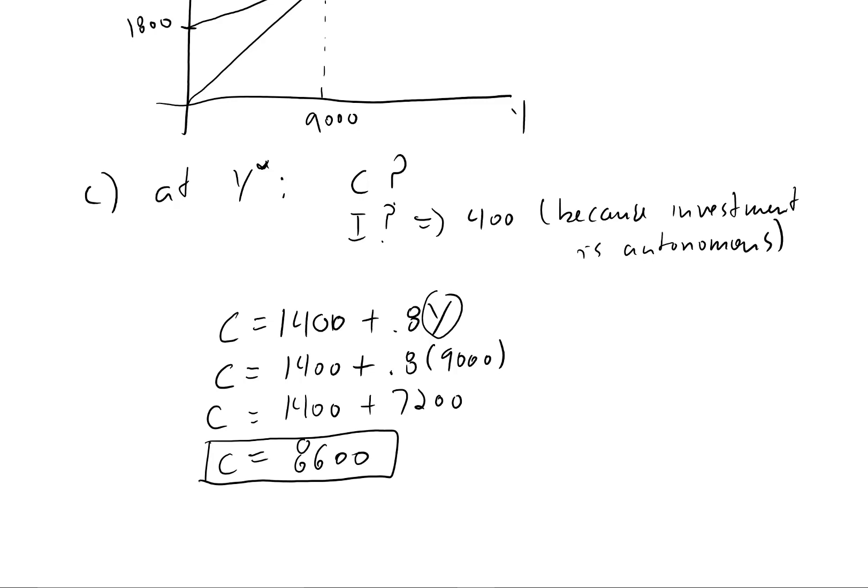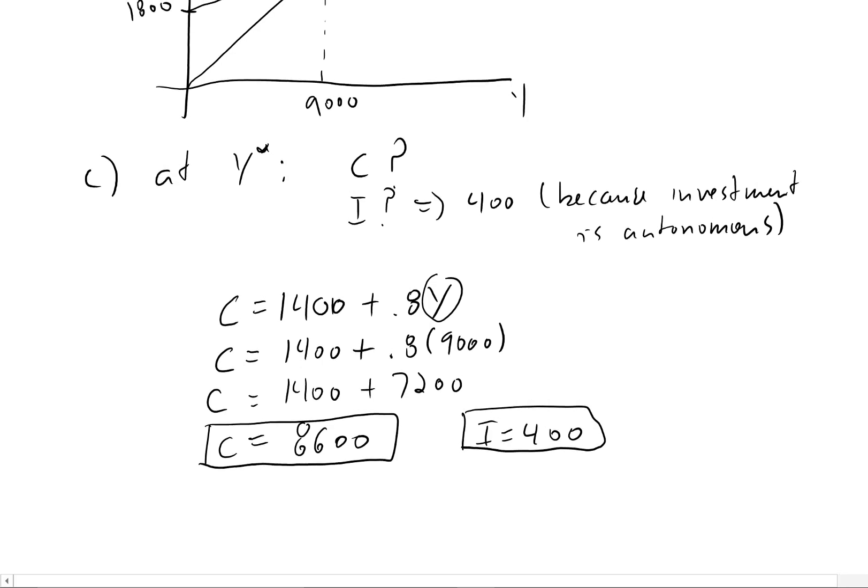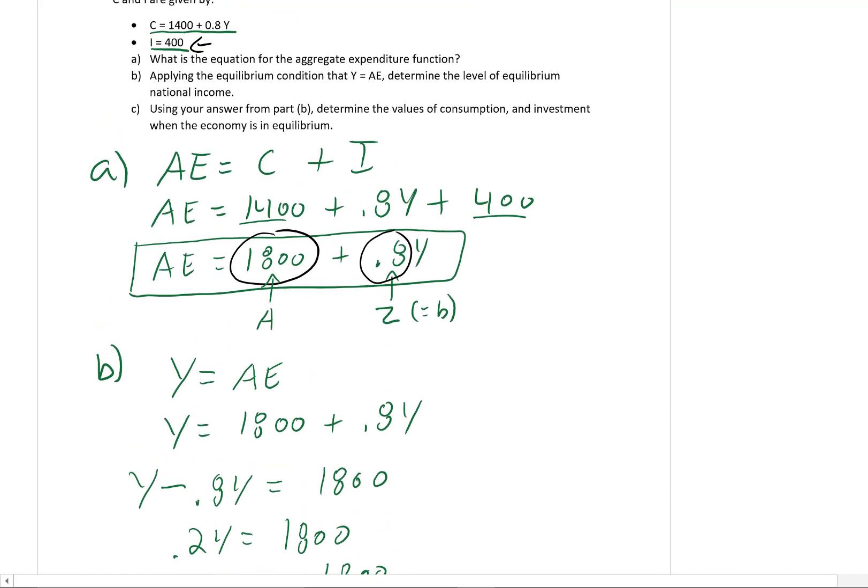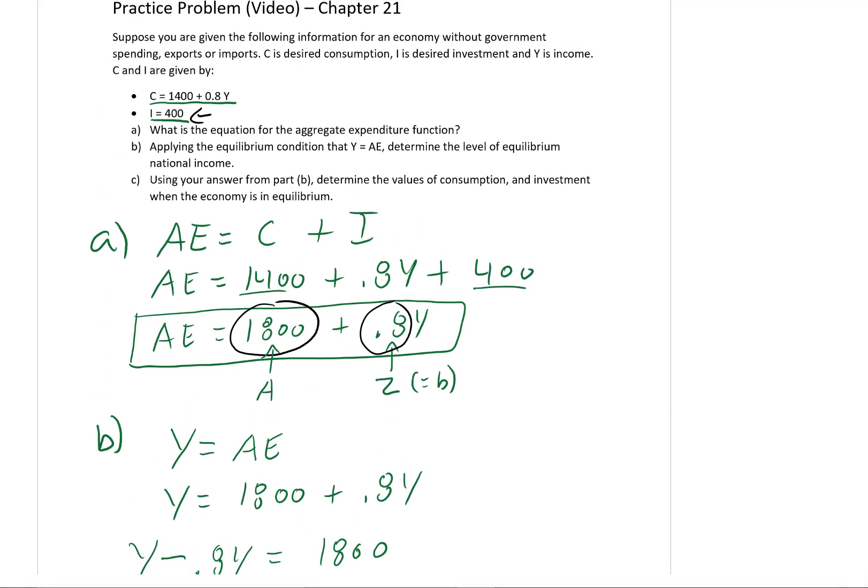So consumption at equilibrium is equal to 8,600. And this makes sense because now we have investment equals 400. So now consumption and investment together equal 9,000, which is what we just solved for our equilibrium. So hopefully this gives you a good foundation when you're asked to solve any kind of numerical problem or the model, helps you review the steps that you should take when solving the simplest short-run model in general.